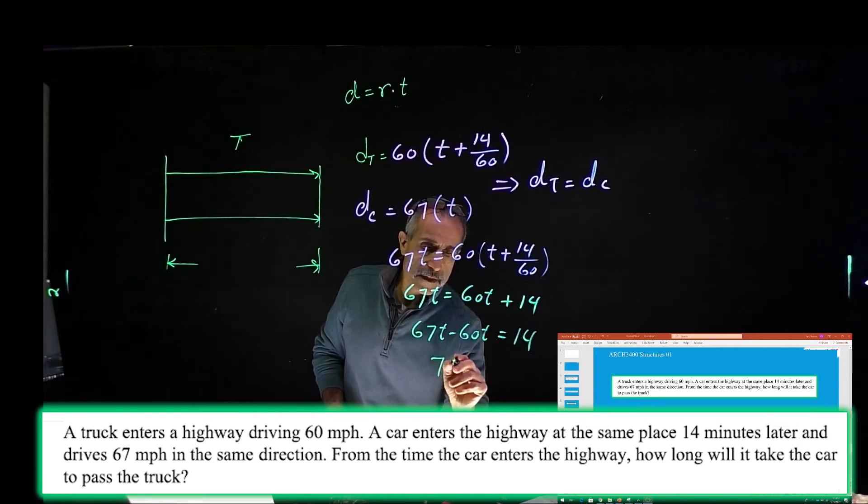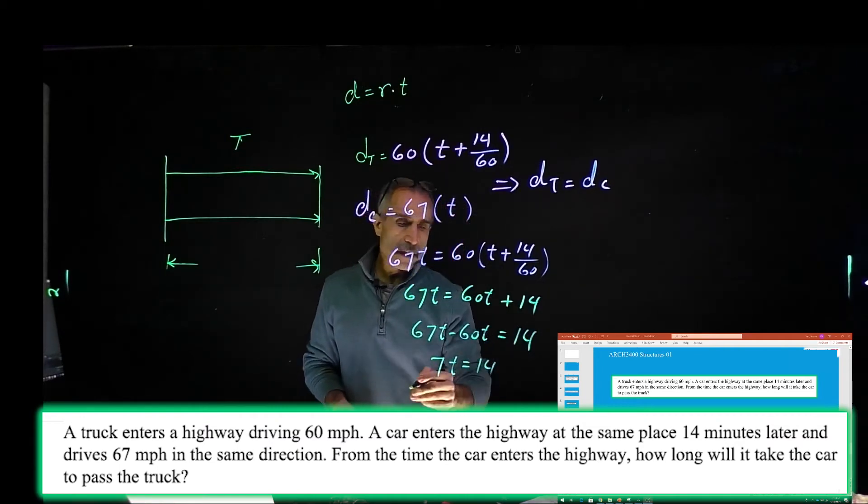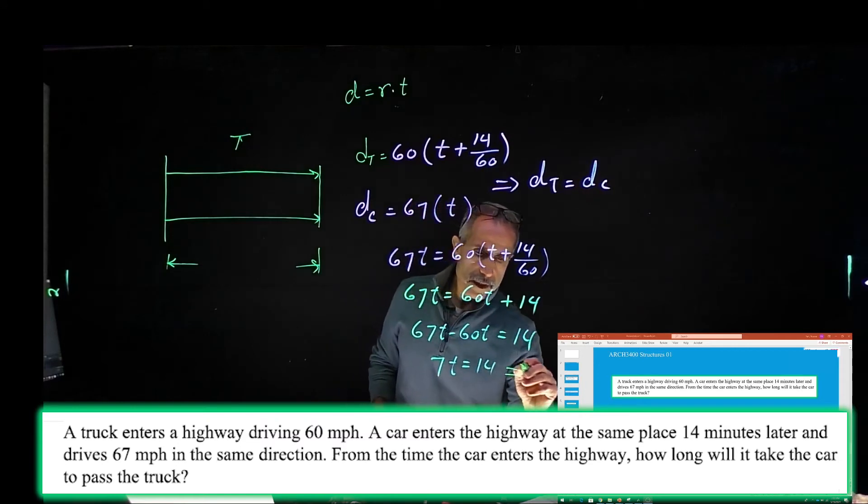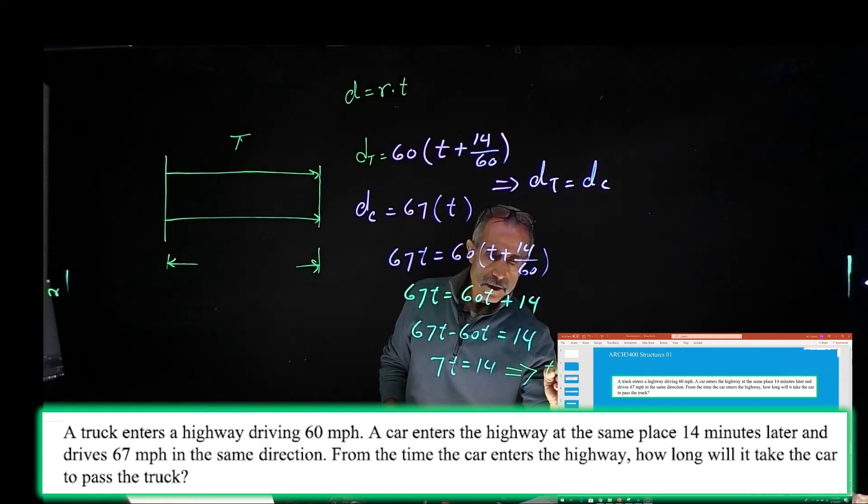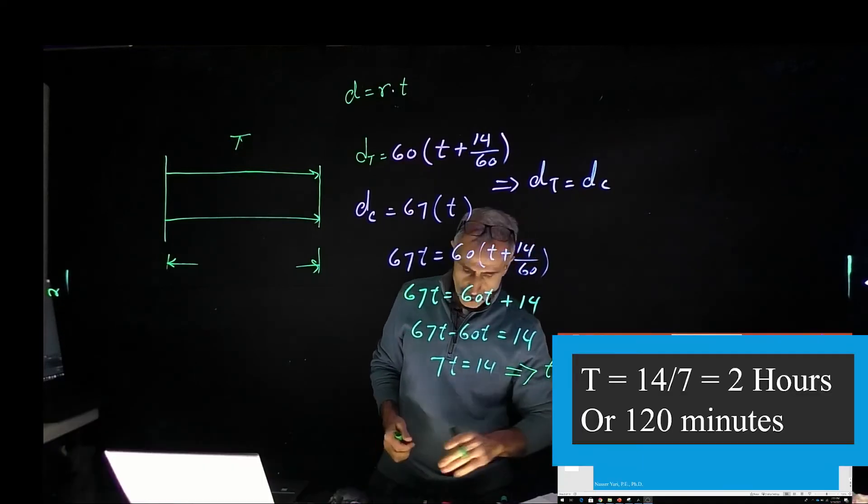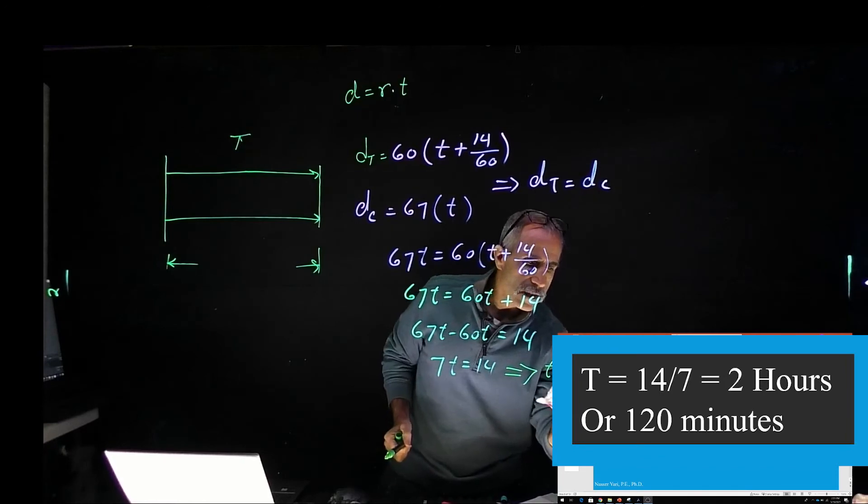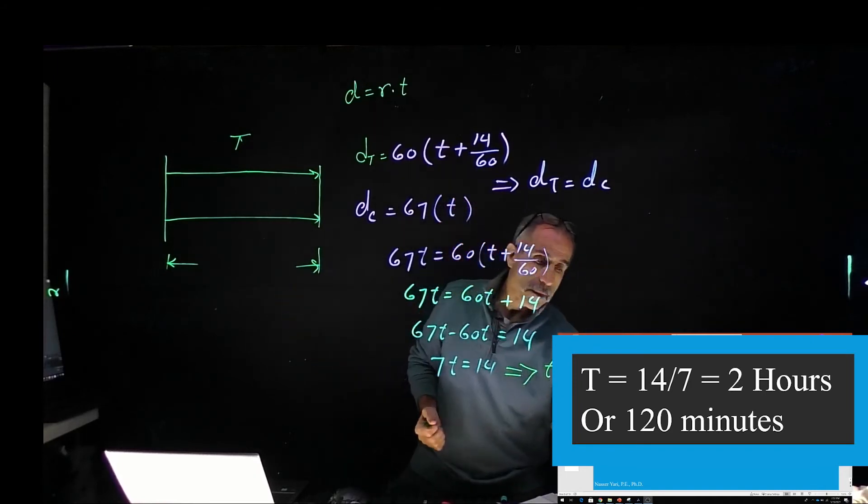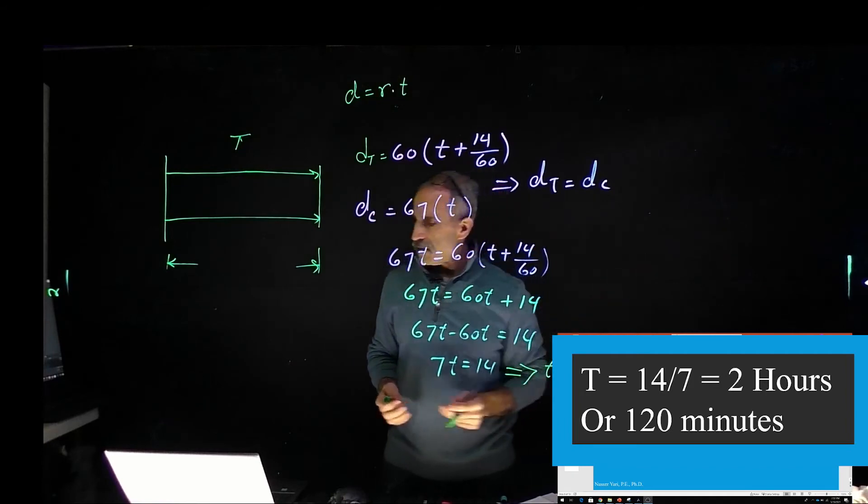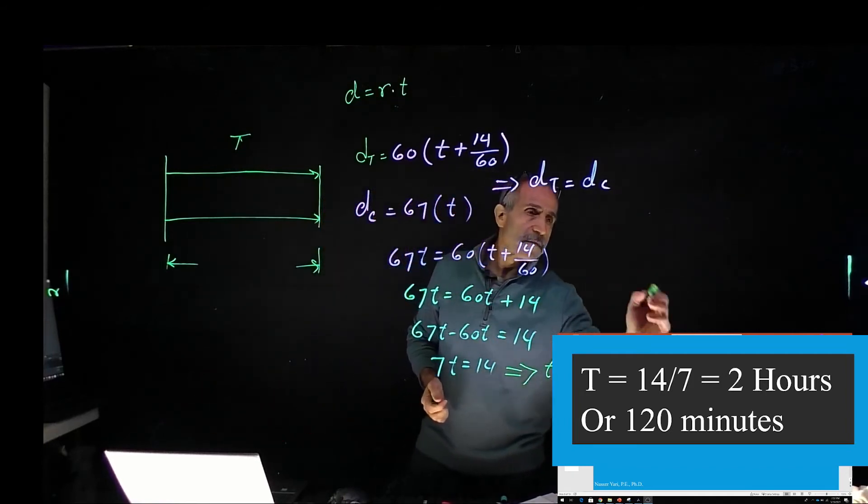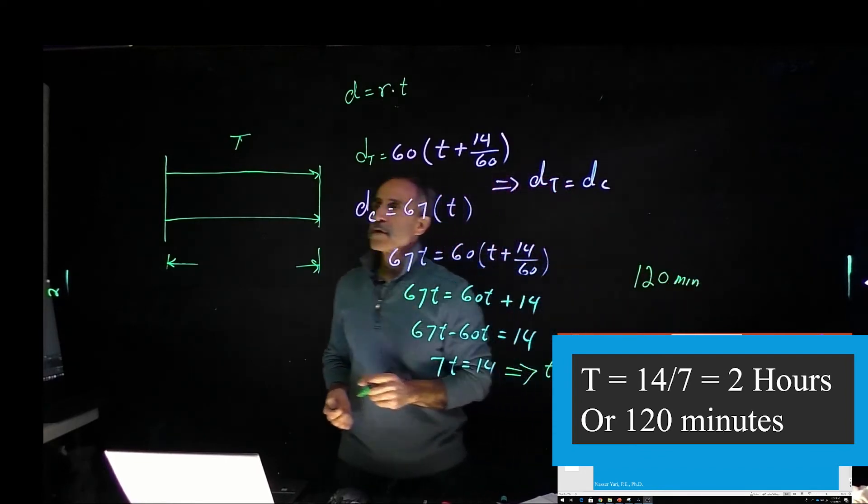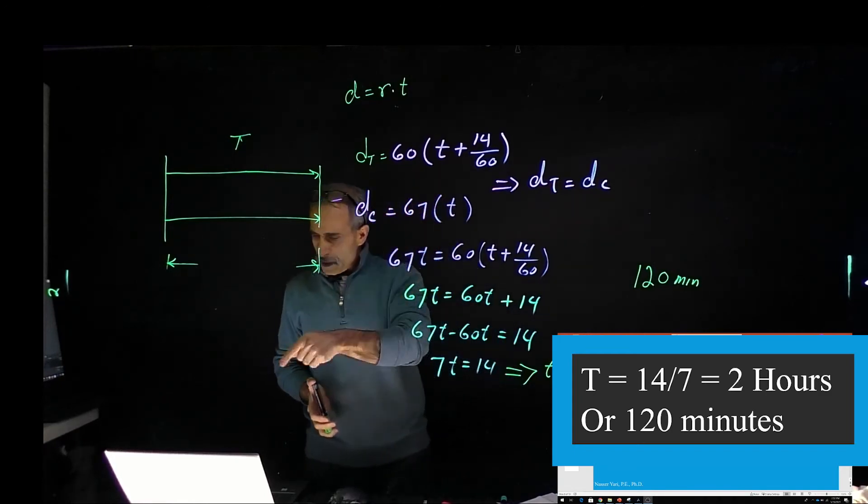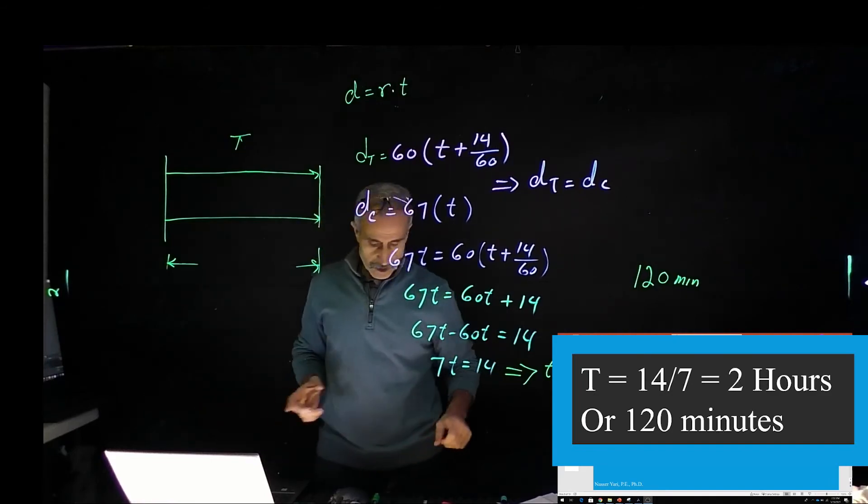And from here, T equals 14 divided by 7, which equals 2. So it's 2 hours. The answer says give it in minutes, so 2 times 60 makes 120 minutes. That's how long it takes for the car to catch up to the truck and pass it. Now we're going to go to the second question.